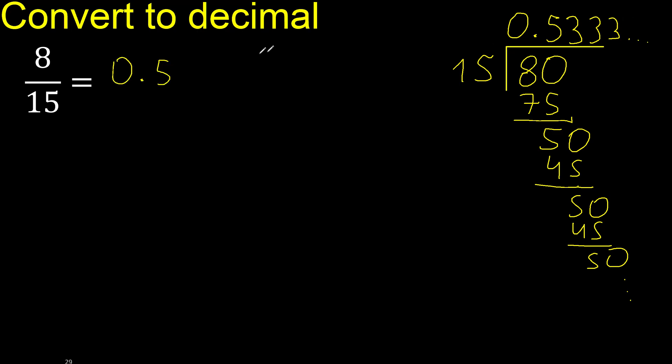3 repeats like this. The answer is 0.5333... — the digit 3 repeats indefinitely. Final answer: 0.5 repeating 3.